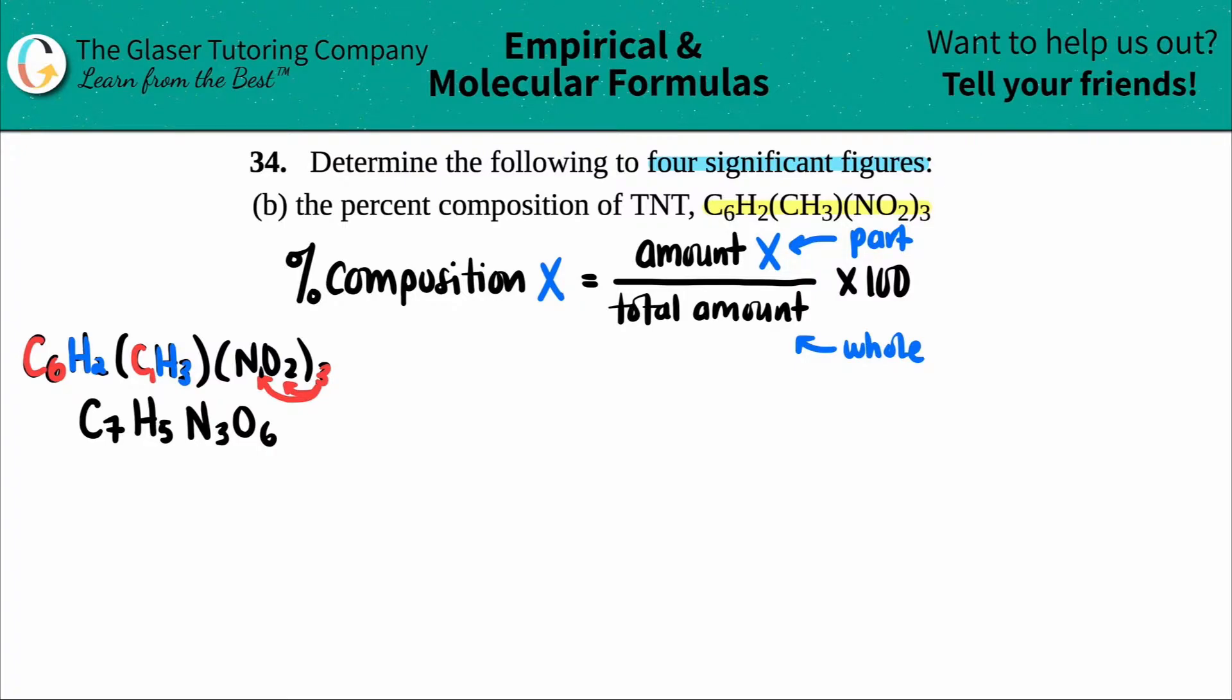So now the compound is a little bit easier to manage. I have a distinct amount for all of my elements. Now I need to find out the percent composition for each of them. Well, how are we going to get these amounts? The amounts are going to be the molar masses coming from the periodic table.